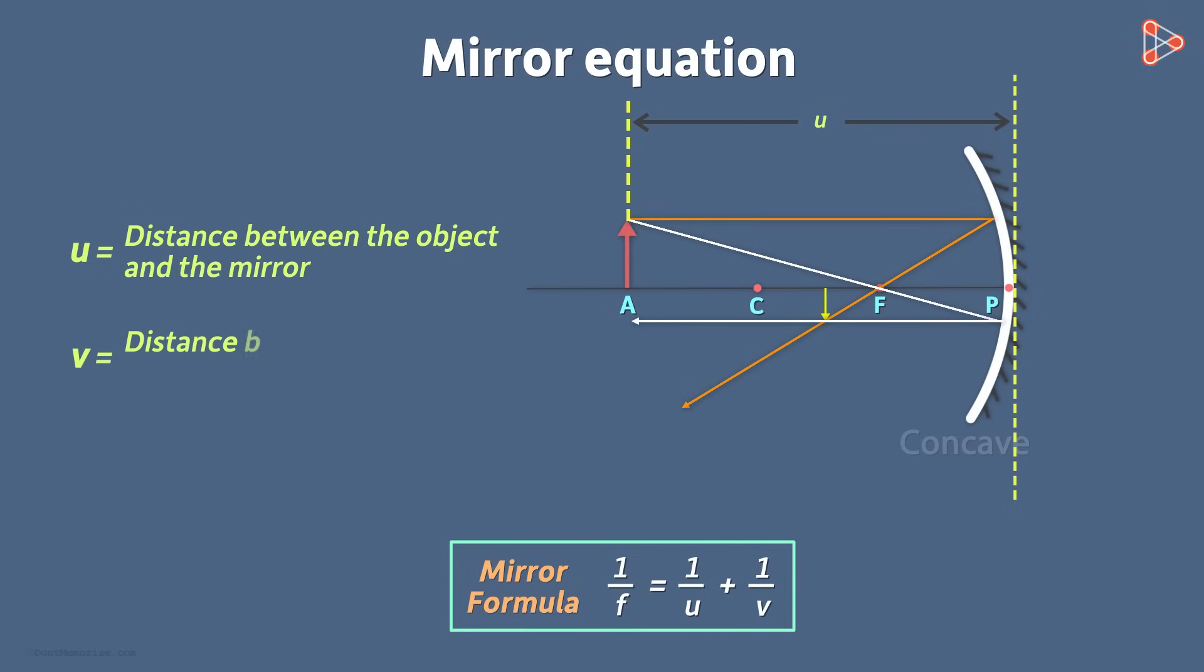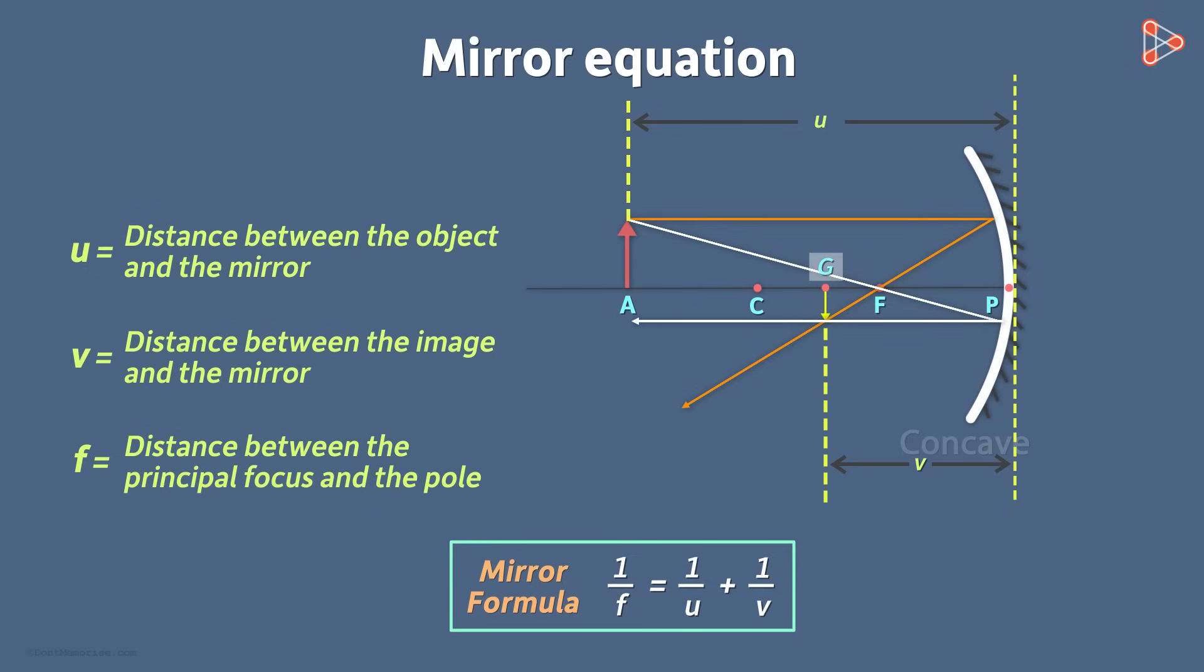v is the distance between the image and the mirror. Let's name this point G. So v is nothing but the distance between points G and P. And f is the focal point which is the distance between the principal focus and the pole. This distance is equal to f. Note that all the distances are measured from the pole of the mirror and not some other point on the mirror.